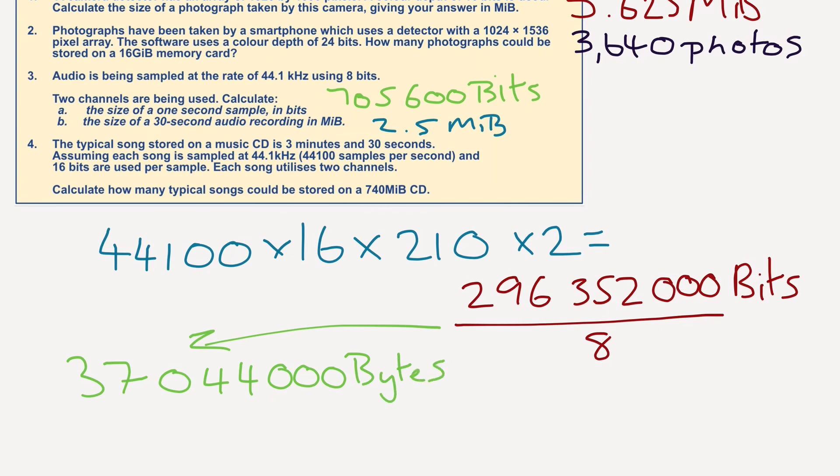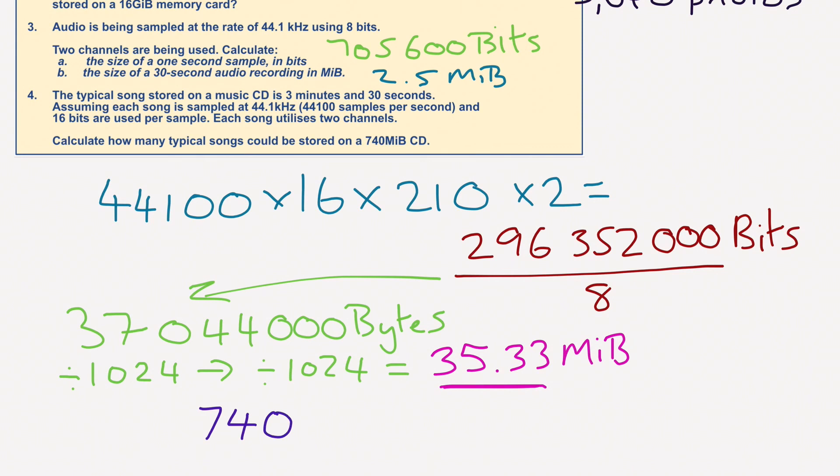But we're going to turn that into megabytes. So, again, divided by 1024, and then divided by 1024, we should get 35.33 megabytes. So this is for one track, 35.33 for one track. But what it's saying is, how many of these typical songs, based on this size, how many of them will fit on a CD that has 740 megabytes? So what do we need to do? I'm going to divide 740 megabytes divided by 35.33, which gives me a total of 20.94. Well, of course, we can't have 0.94 of a song, so the total would be 20 songs.